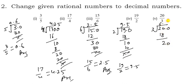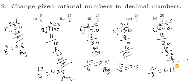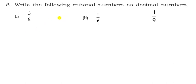For 20 upon 3: three 6s are 18, remainder 2. Place decimal, bring down 0. Three 6s are 18 again, and this repeats. So 20 upon 3 = 6.666... We write this as 6.6 bar.